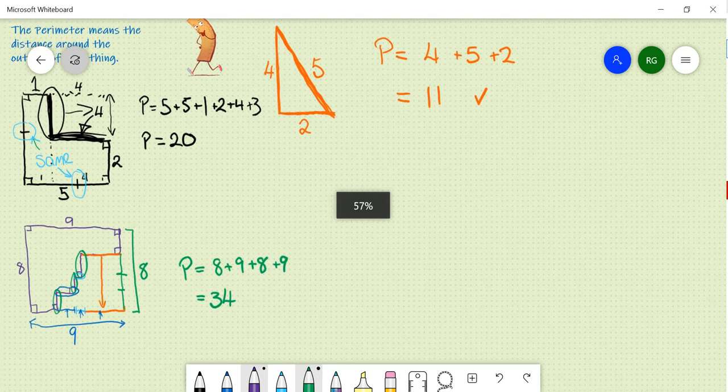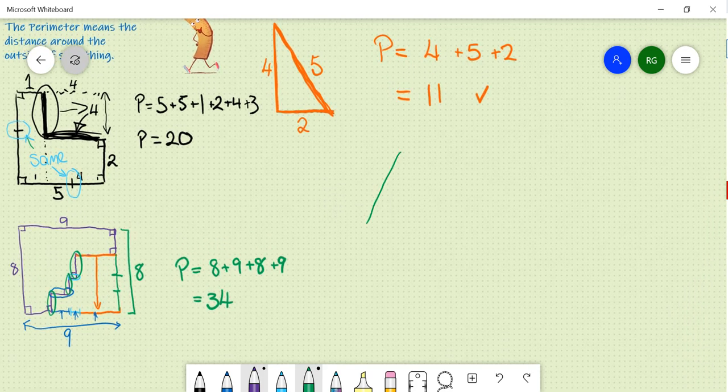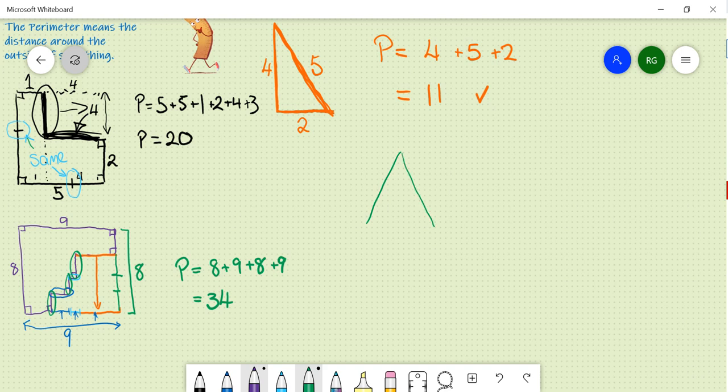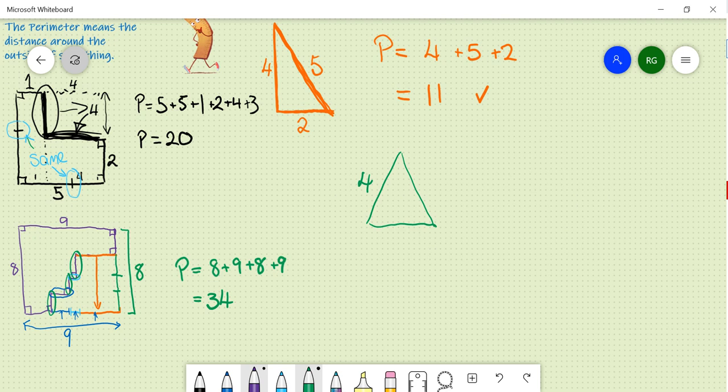One final example that you will sometimes see is, if you see a shape like this, it tells you that this side is four, and then you see these little dashes. What they are indicating, as mentioned previously, is that this and this are the same length. So, therefore, this side, on the right hand side of this triangle, must also be four.